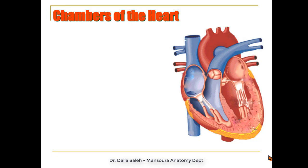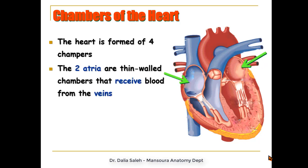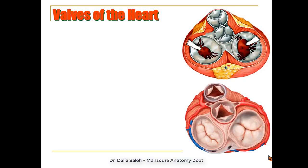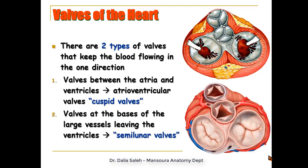If we cut the heart open, we can see the four chambers: two atria, which are thin-walled and receive blood coming from veins, and two ventricles, which have thicker walls and pump blood out of the heart through the arteries. After removal of the atria and the big arteries, we can see the valves of the heart. There are two types of valves that keep the blood flowing in one direction.